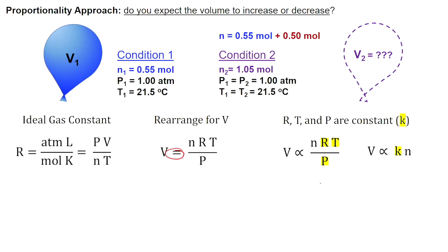I've highlighted all of our constant variables and we can combine them all together and simplify them to be represented by small k. Based on this proportionality, do you expect that the volume is going to increase or decrease when our amount has increased?